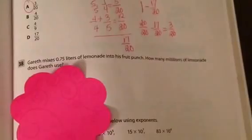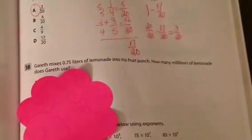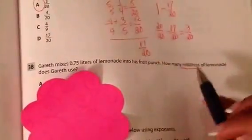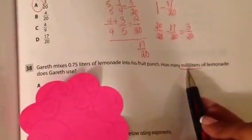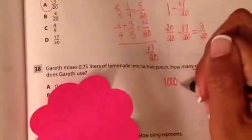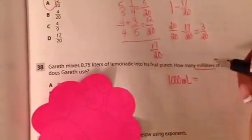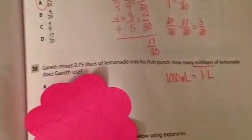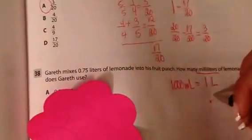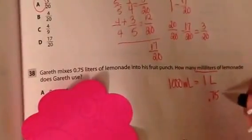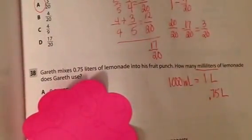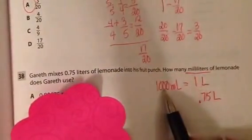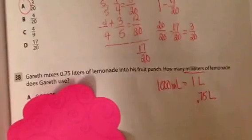Move on to the next one. Gareth mixes 0.75 liters lemonade and fruit punch. How many milliliters is this? This is something that we're going to get to next week. But in science class, the kids learn that there are 1,000 milliliters. If you know Spanish, mil is 1,000. There are 1,000 milliliters in 1 liter. So if I have only 0.75 liters, let's think about our property of 1 here.